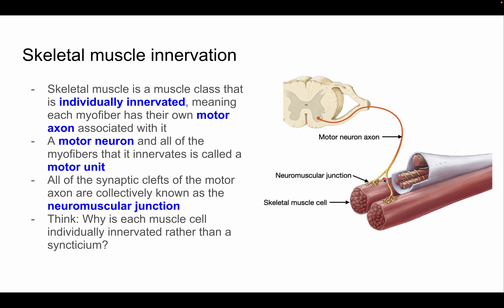Why is each muscle cell individually innervated rather than forming a syncytium? Sarcomere contraction is all-or-nothing — it either completely contracts or it doesn't. If skeletal muscle cells formed a syncytium, your entire muscle would contract at once. For example, your entire bicep would instantly fully contract, which isn't useful. Individual innervation allows motor neurons to contract only some myofibers rather than all of them at once.